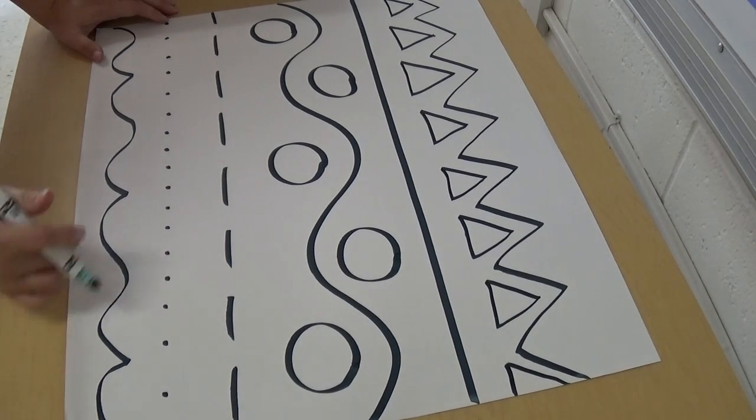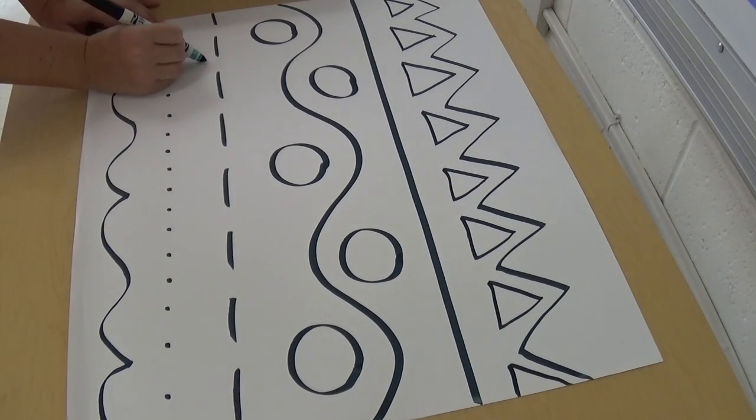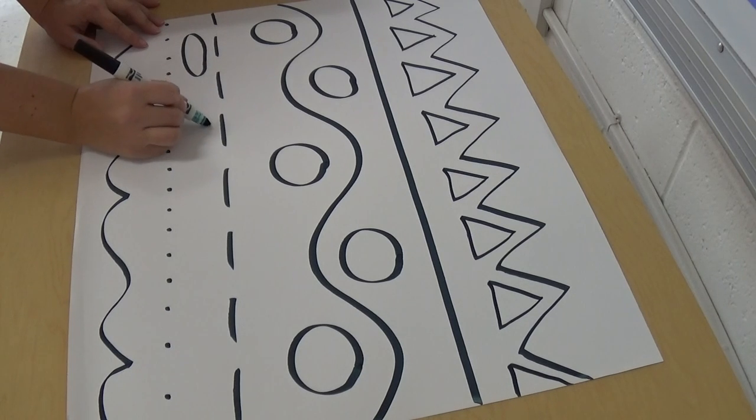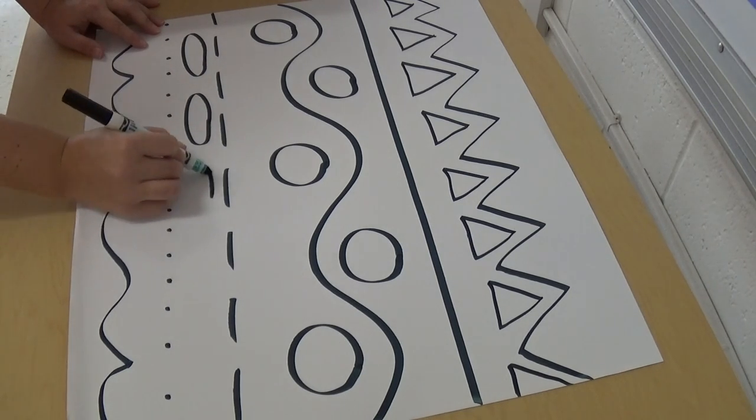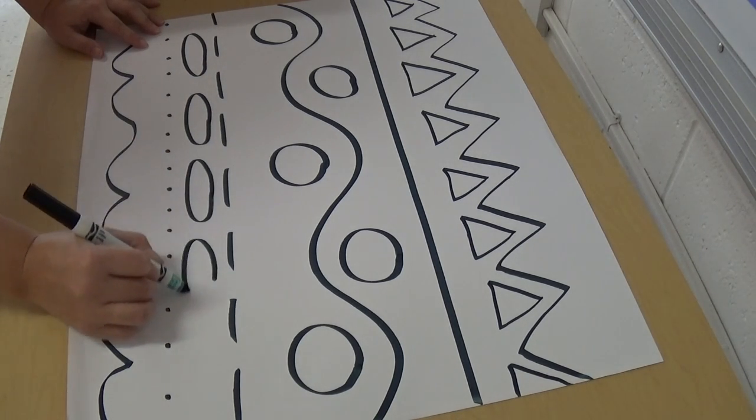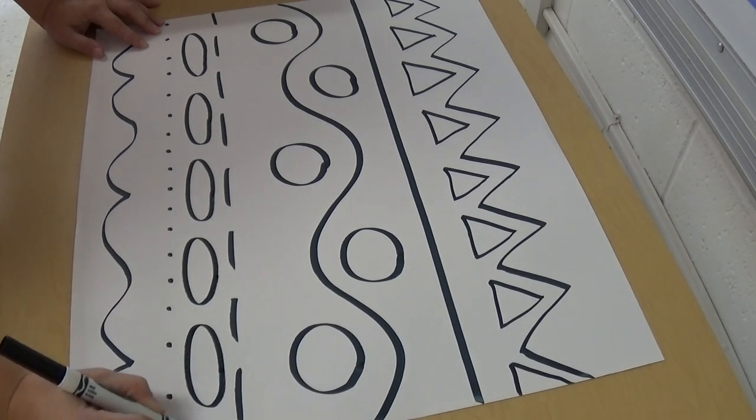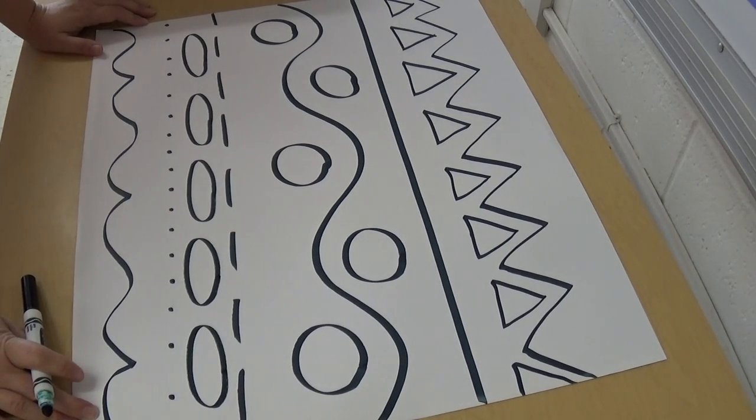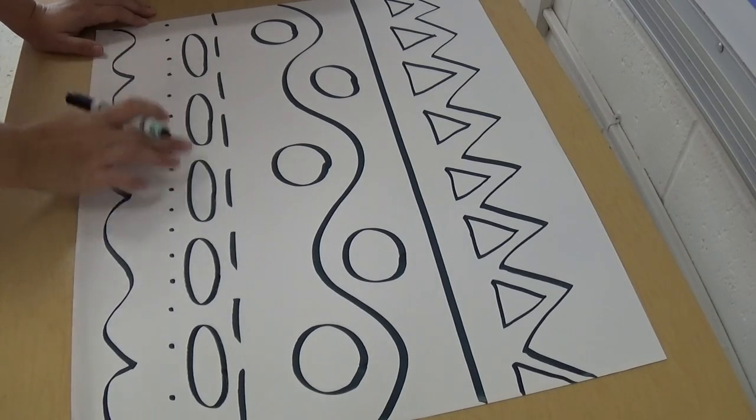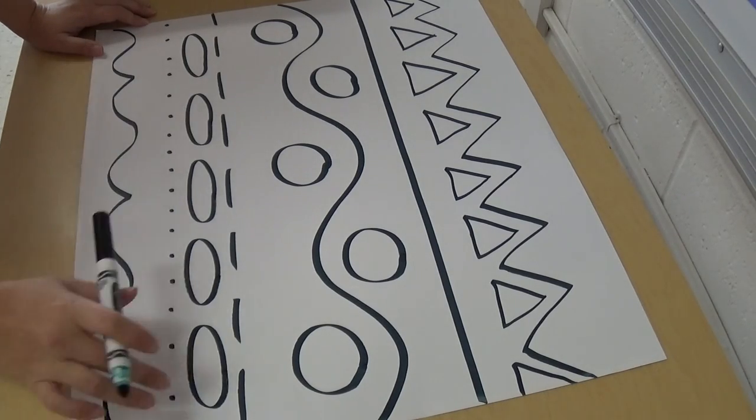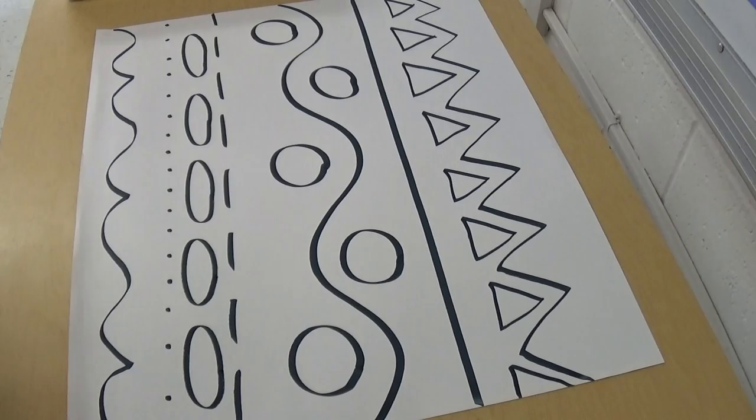Hmm, maybe I'll make an oval. I'll make some ovals in here. Look at my friends, my design's repeating. It's making a pattern, because my shapes are repeating over and over again.